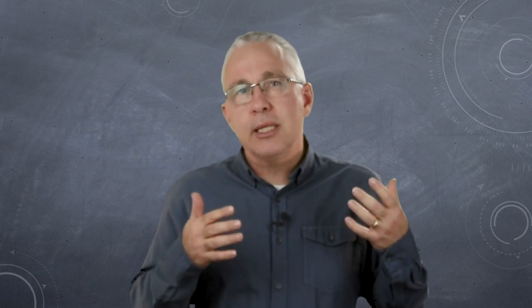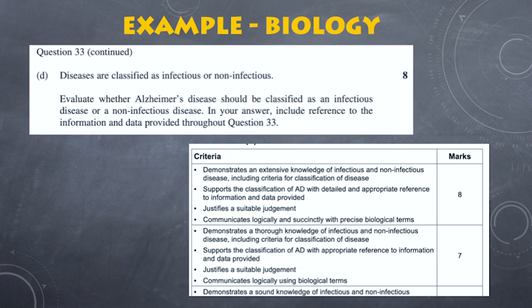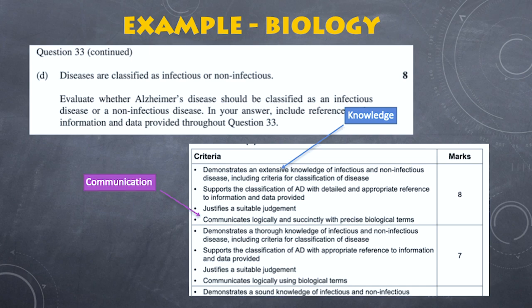Here's an example from the biology exam about diseases. I won't go through the question in detail, but I want to highlight something about the marking guidelines. In order to get the maximum marks for this question, you need extensive knowledge — which is the band 6 criterion for the knowledge section. Furthermore, to get that 8-mark response, you need to demonstrate that knowledge in a way that is logical and succinct, with precise biological terms. You could be very knowledgeable but disorganised in your language, and all of a sudden you don't meet the criteria and you lessen your chances of getting a band 6.